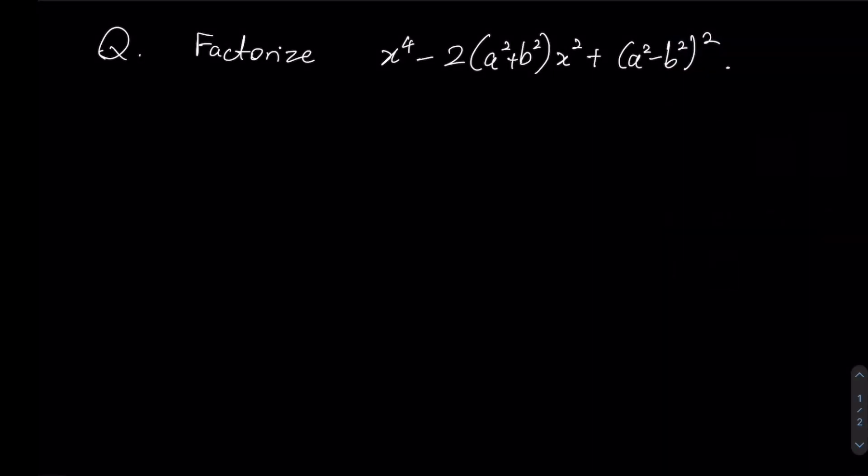For this lesson, we will be using various algebraic identities with difference of squares, which is a² minus b², being the primary method. So let's dive right in.